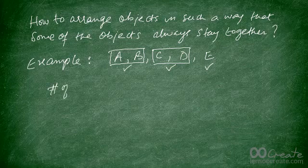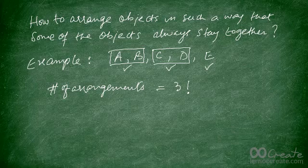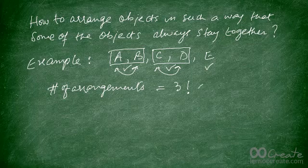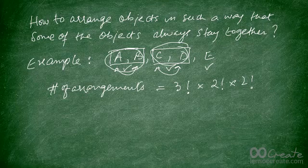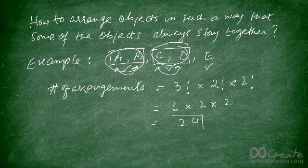It's actually quite easy. You assume that A and B as a group is one object, and C and D as a group is another object, and E is the third object. So essentially you're arranging three objects, not five. The number of arrangements is three factorial. But A and B can interchange positions within their group, giving two factorial, and C and D can also interchange, giving another two factorial. So the final answer is 3! × 2! × 2! = 6 × 2 × 2 = 24.